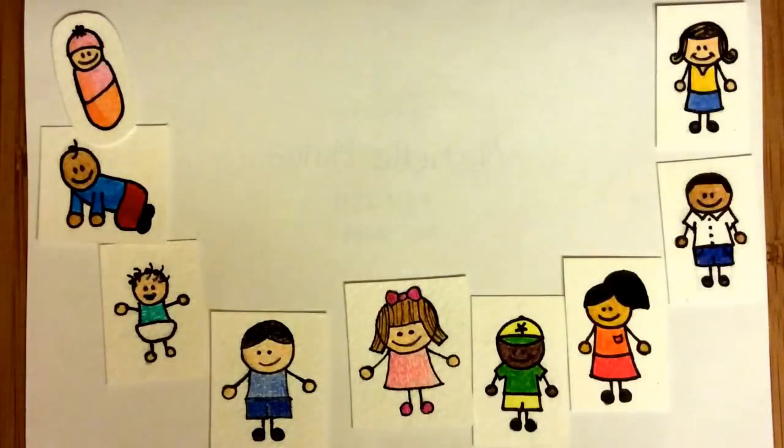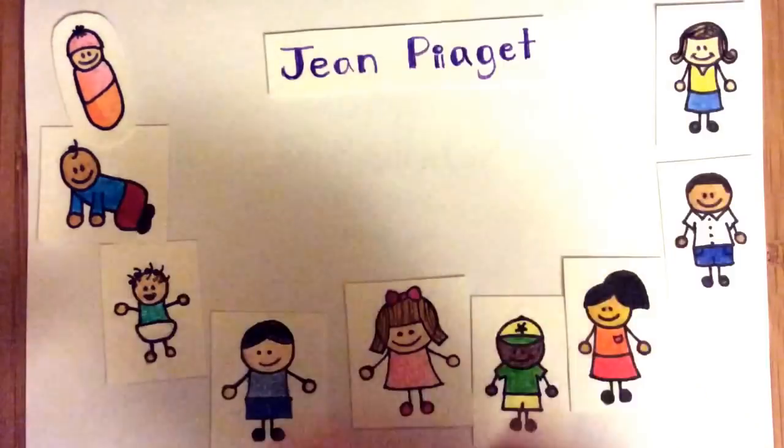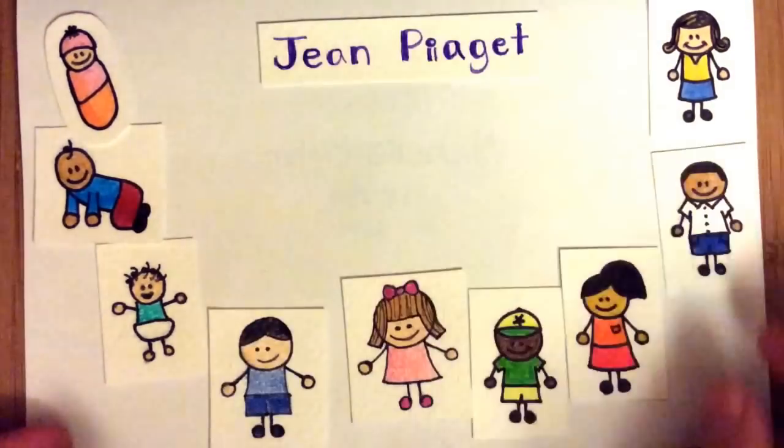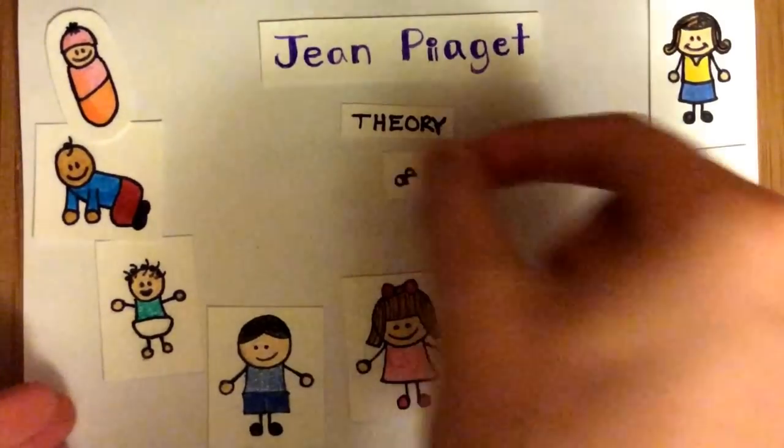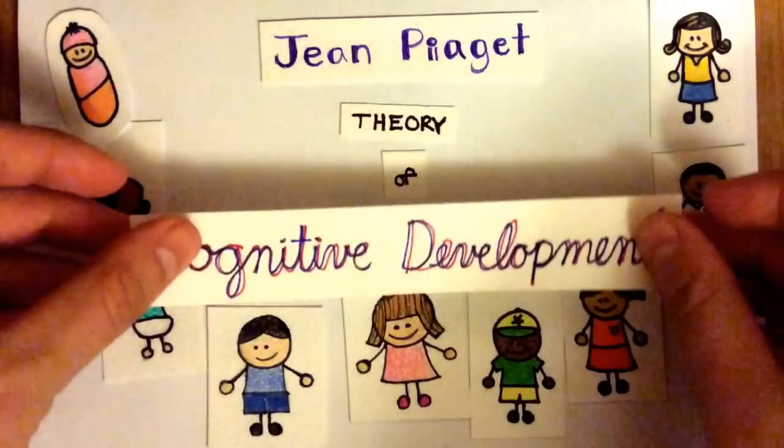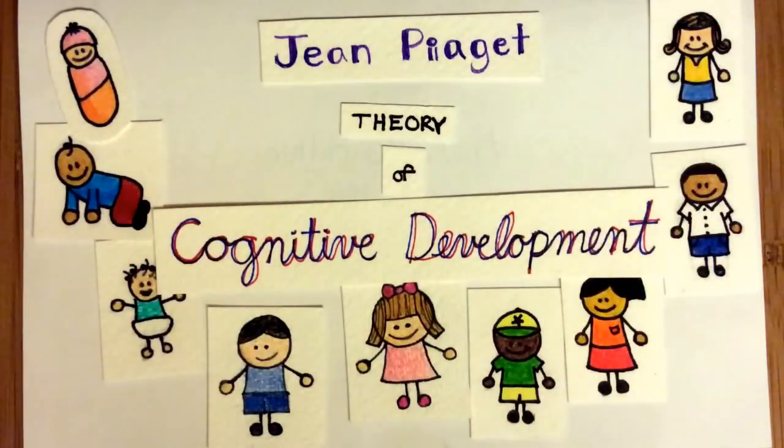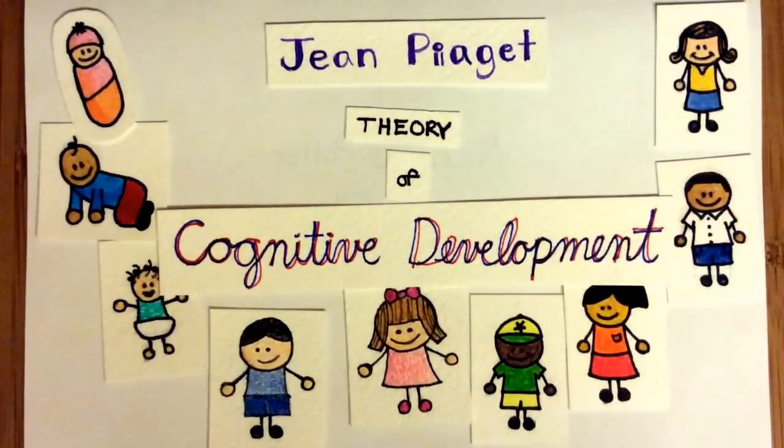One of the most central and enduring theories of developmental psychology is the theory of cognitive development created by Jean Piaget. This constructivist theory relies upon the idea of an active child that is intrinsically motivated to learn. The theory is divided into four stages of development.